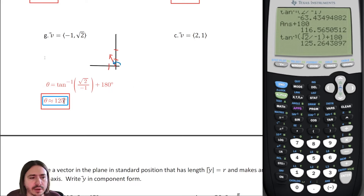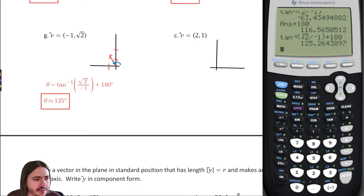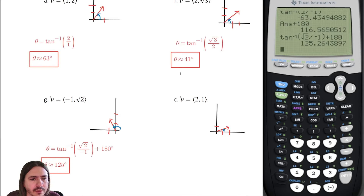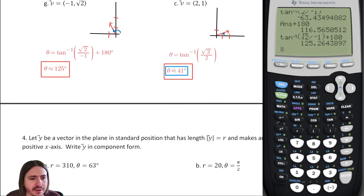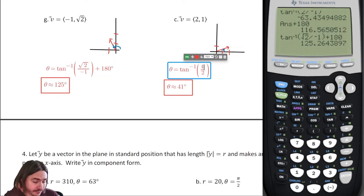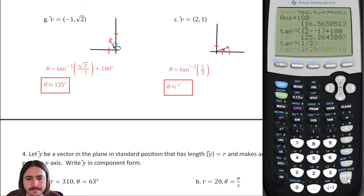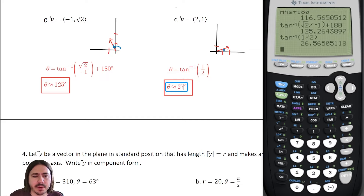Vector two comma one is in quadrant one — no need for the plus-one-eighty adjustment. The reference angle equals the direction angle here. From a rough sketch this should be a pretty small angle, less than forty-five degrees. Using the inverse tangent of one-half in the calculator: we get about twenty-seven degrees.